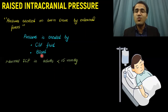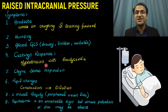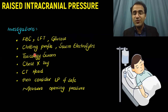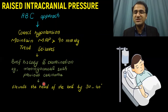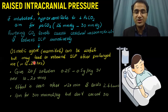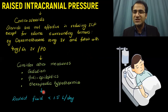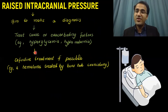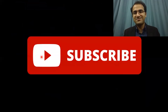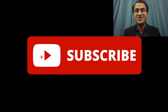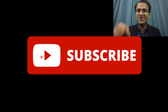In summary, we talked about what raised intracranial pressure is, its causes, symptoms, Cushing's response, Cheyne-Stokes breathing, investigations, and treatment — including the ABC approach, brief history, head elevation, hyperventilation, osmotic agents like mannitol, corticosteroids only for tumor-related edema, therapeutic hypothermia, fluid restriction, and treating the underlying cause. Please click the subscribe button and check out the other videos on emergency medicine linked in the description below.